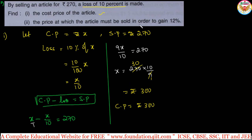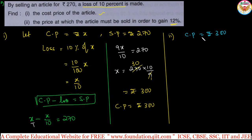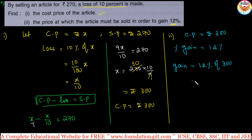Now the second question: find the price at which the article must be sold to gain 12 percent. The cost price is ₹300 — it does not change. We need 12 percent gain. Gain equals 12 percent of cost price, that is 12 by 100 into 300, which equals ₹36. So ₹36 is the profit or gain.